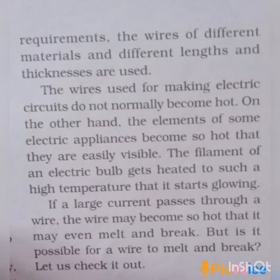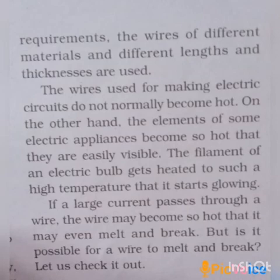The wires used for making electric circuits do not normally become hot. On the other hand, the elements of some electric appliances become so hot that they are easily visible. The filament of an electric bulb gets heated to such a high temperature that it starts glowing.